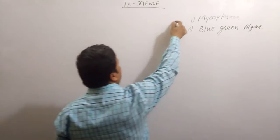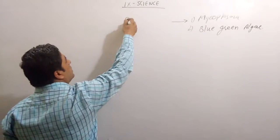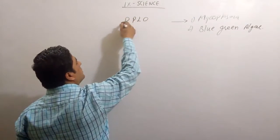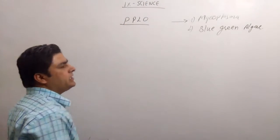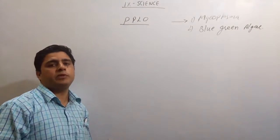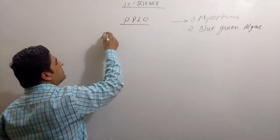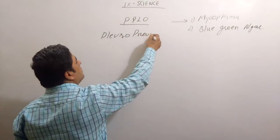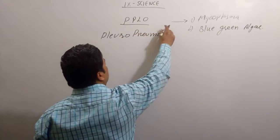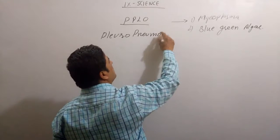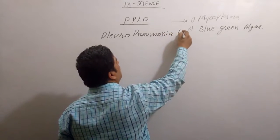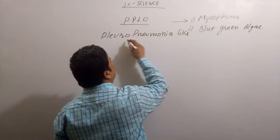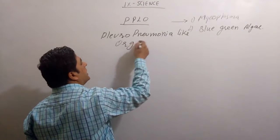First, we will discuss mycoplasma. Mycoplasma's another name is PPLO. PPLO stands for Pleuropneumonia-Like Organism.